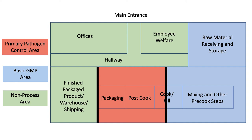In this simplified example, the cook step has an entry point for raw material in one room on one side of the wall and an exit point for finished product on the other side of the cook step in a different room. The room where cooked product is exposed up to and including packaging is the primary pathogen control area, shown here in red.